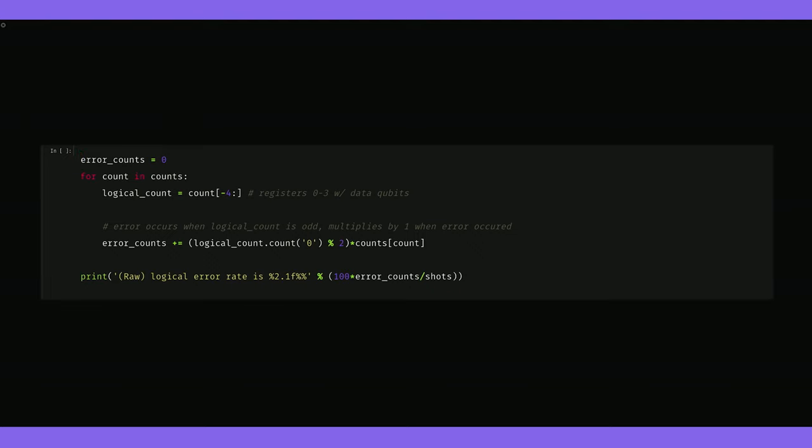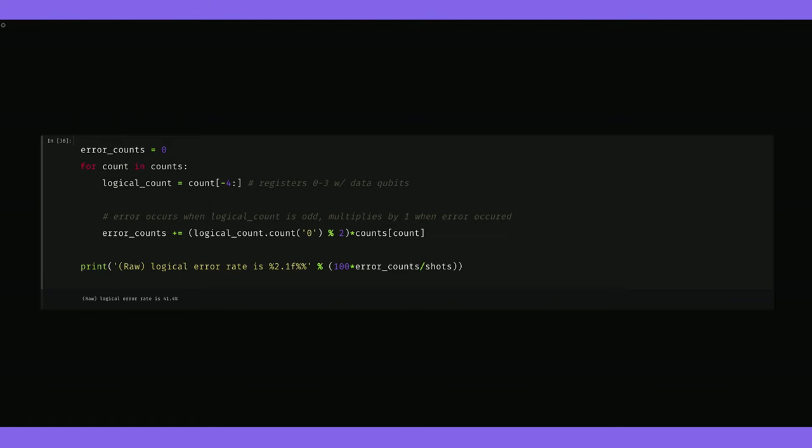Let's calculate the logical error rates from this experiment. Our logical operators correspond to parity, so we'll consider the parity of the ZZZZ measurements, i.e. just the bit flips. Just considering the outputs without the results of error detection, we get a raw logical error rate of 41.4 percent. Yikes! But I should mention by raw logical error rate, I mean here we have not used fault tolerant initial state preparation or decoded the logical states, so this will be a bit higher than normal.